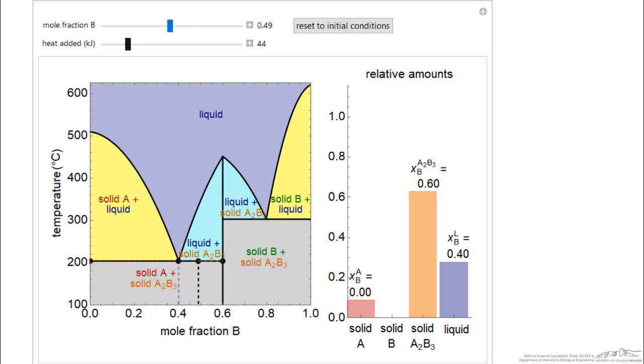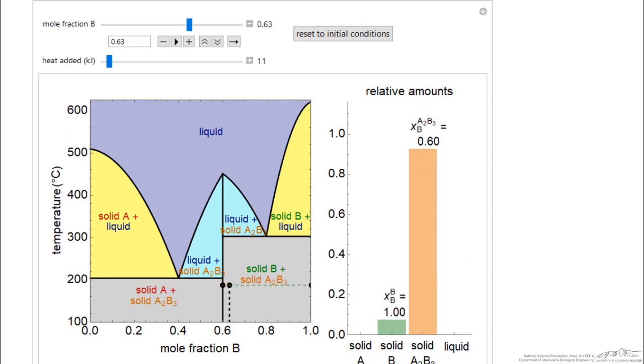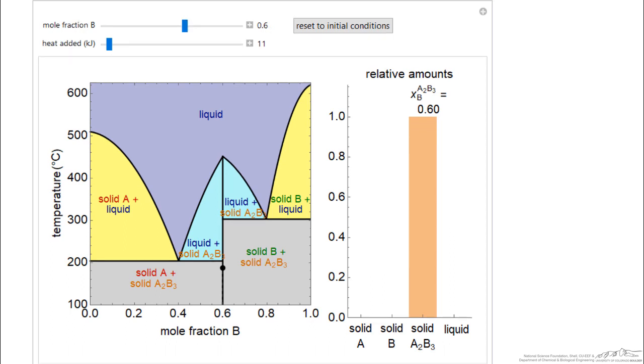And let's look at the case where I have a mole fraction, and I'll adjust that to 0.6. So mole fraction of 0.6, this is the compound. As I add heat, well, not much happens except the temperature goes up until I get to this point.